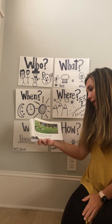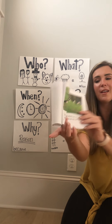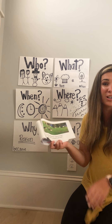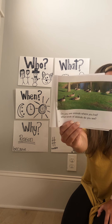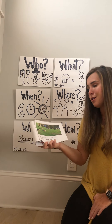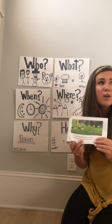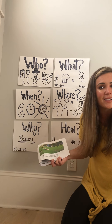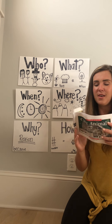Do you see animals where you live? What kind of animals do you see? You can answer out loud or tell a family member. When you were sharing animals that you see, you might have been making some connections — you might have said some of the same animals from the book, like squirrels, ducks, or geese. Or you could have thought of different animals not in the book, like cats or different birds.